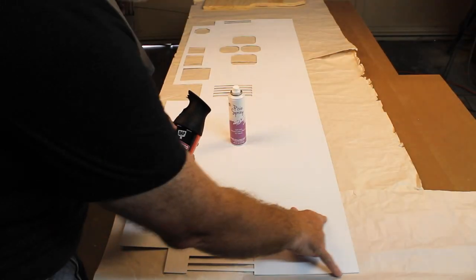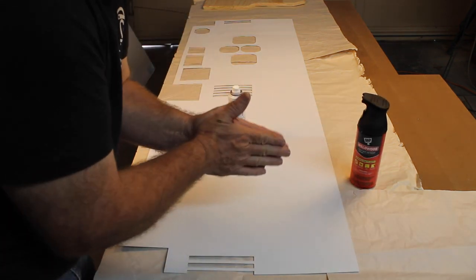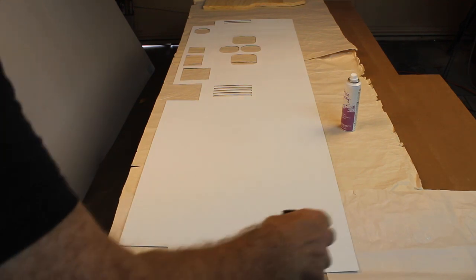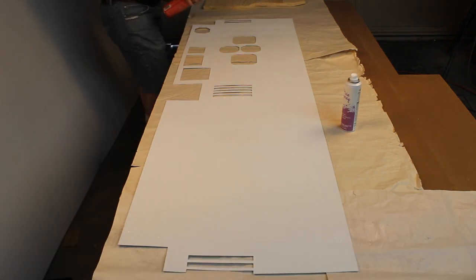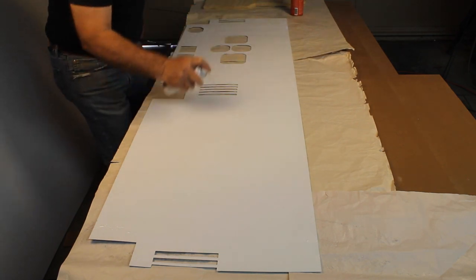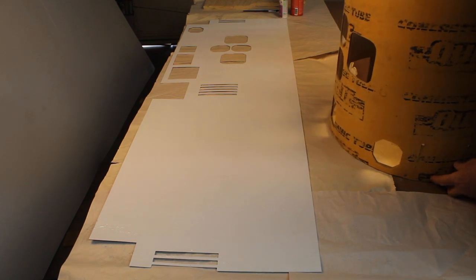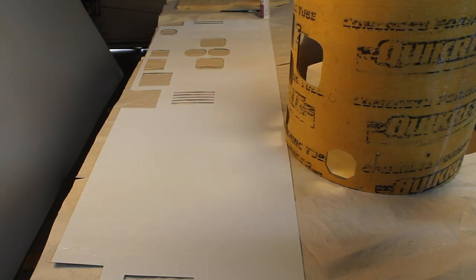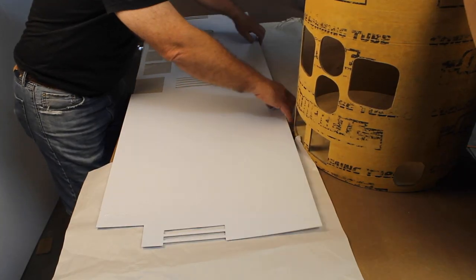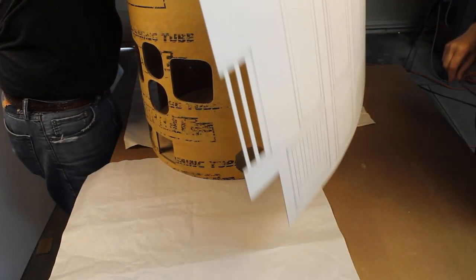We're going to put contact cement on this portion and on the tube because once you stick it together you can't get it apart. Contact cement requires you to do it on both sides. A little globier than I wanted it. Got my lovely assistant here helping and we'll try to mount this.